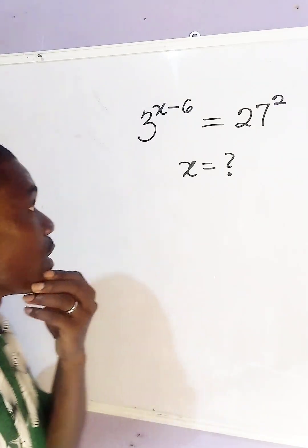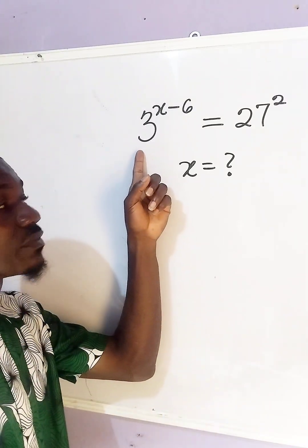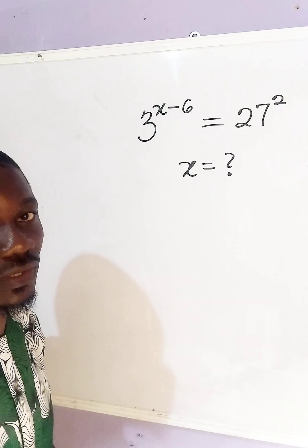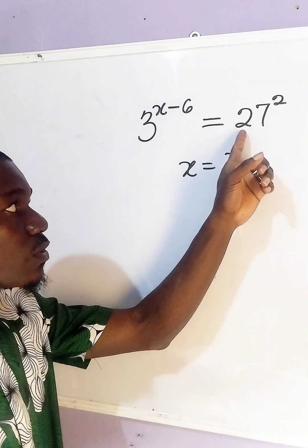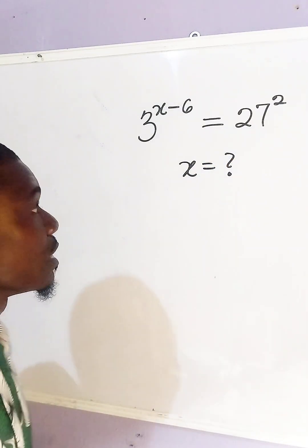Let's find x in this exponential equation. Here we have a base of 3 and here we have a base of 27. Now let us see how we're going to reduce 27 to a base of 3.